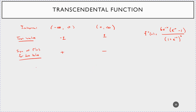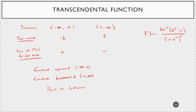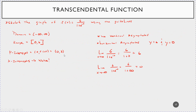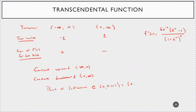So the function is concave upward on (-∞, 0) and concave downward on (0, ∞), which means we have a point of inflection at x = 0. That's f(0) = 3, our y-intercept — the point (0, 3) is both the y-intercept and the inflection point.